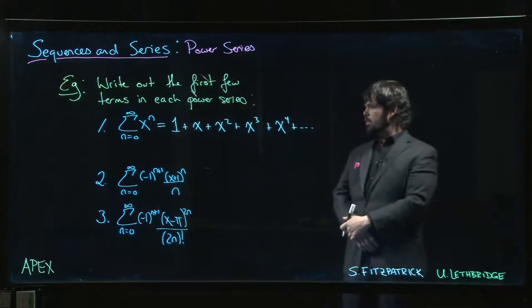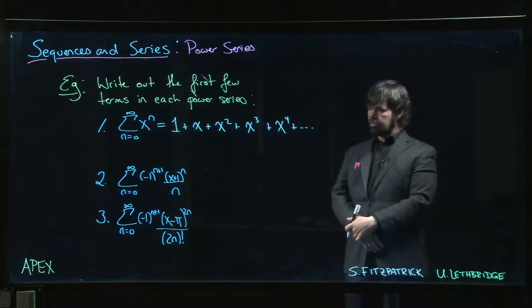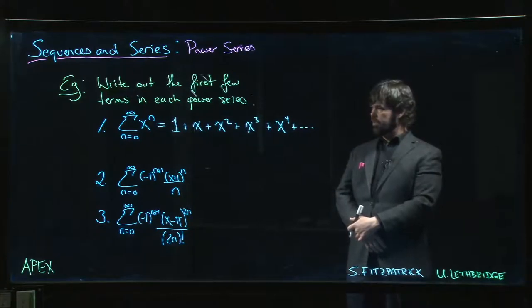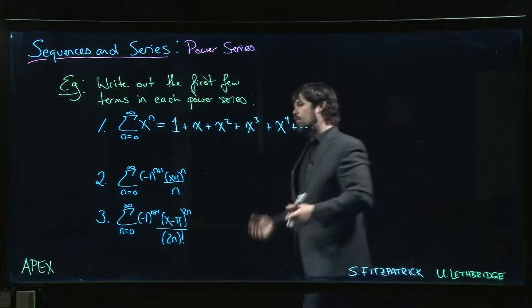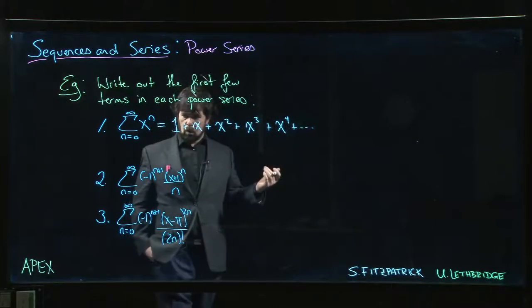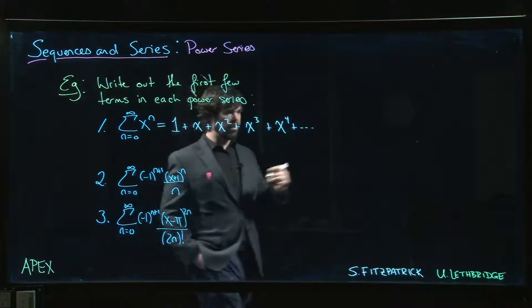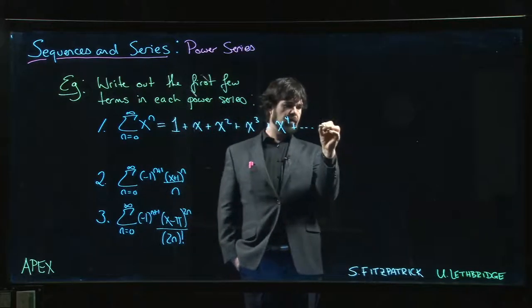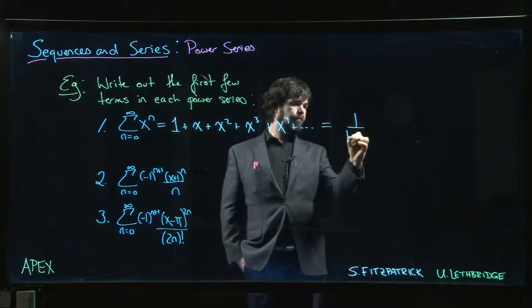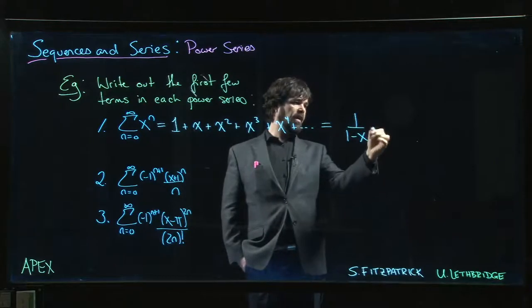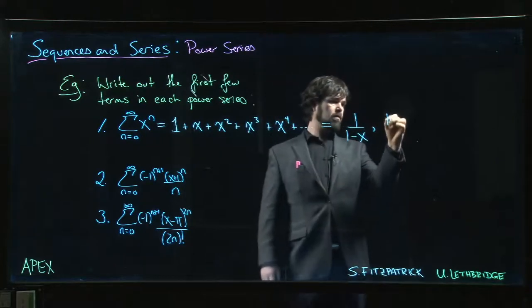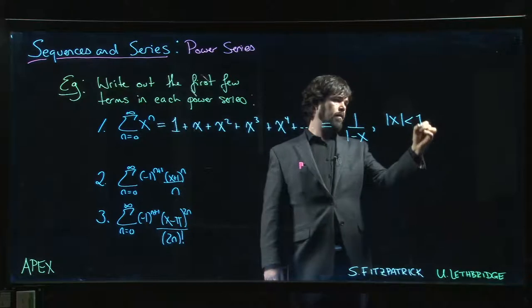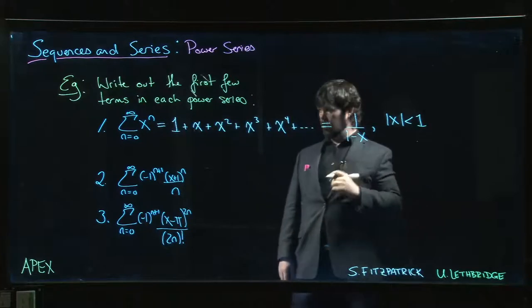Actually, this one, we know what to do with this one. We actually can say quite a bit about this. It's just a geometric series. We have x instead of r, but it's just a geometric series, r is equal to x. So we actually know what this one adds up to. We've done this already. This is one over one minus x for the absolute value of x less than one.